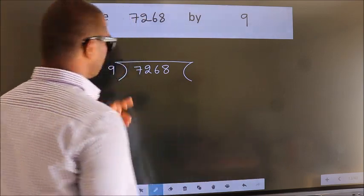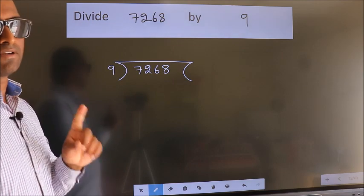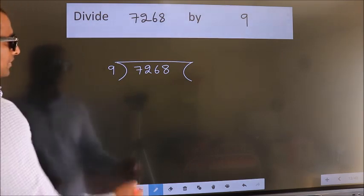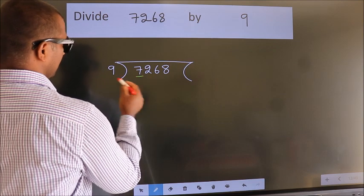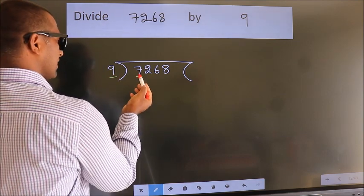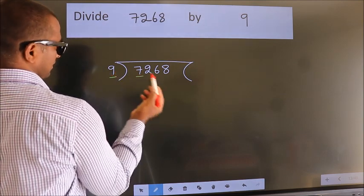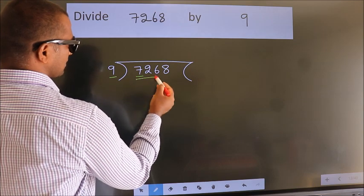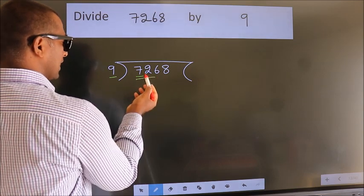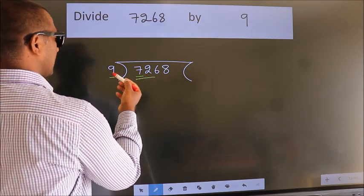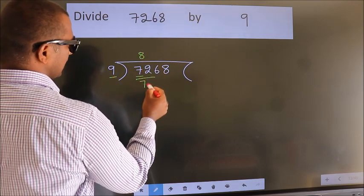This is step 1. Next, here we have 7, here 9. 7 is smaller than 9, so we should take 2 numbers: 72. When do we get 72? In the 9 table, 9 times 8 is 72.